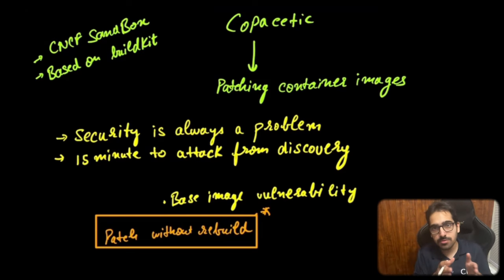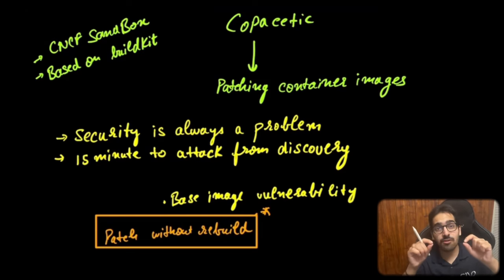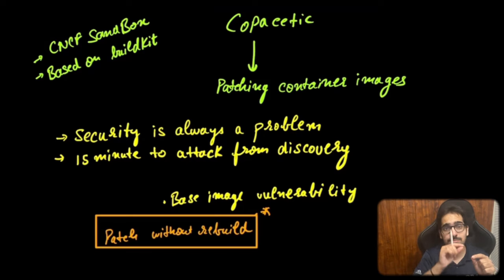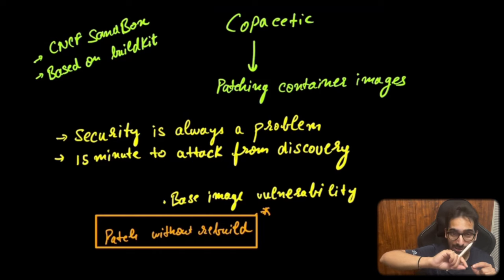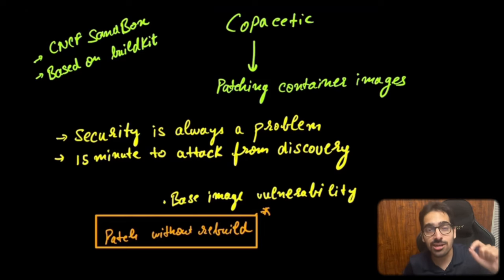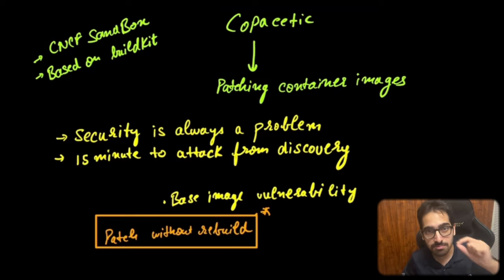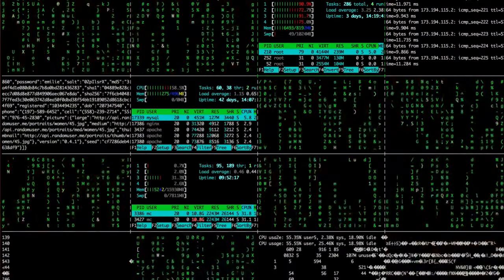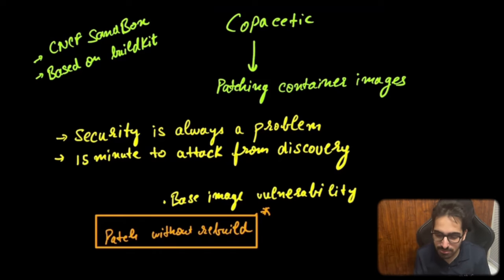According to recent reports, the time from when a vulnerability is discovered to when an attacker exploits it is becoming shorter and shorter — even less than 15 minutes. Imagine a scenario where a vulnerability is discovered inside a base image or third-party tooling and in less than 15 minutes there's an attack running malicious code or exfiltrating data from your running applications. It's a nightmare.